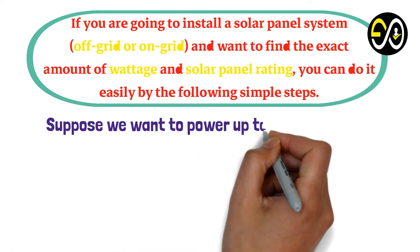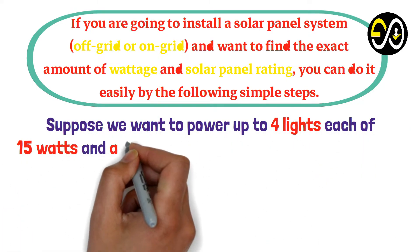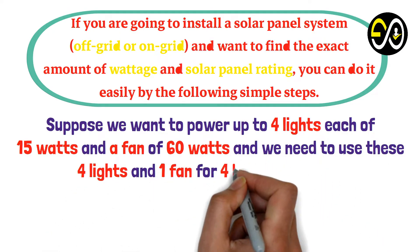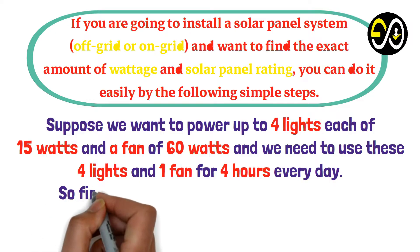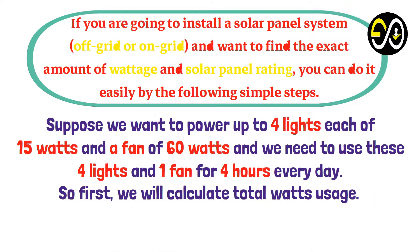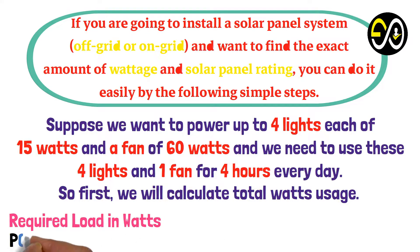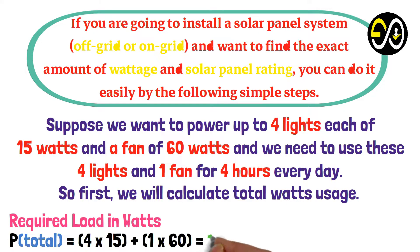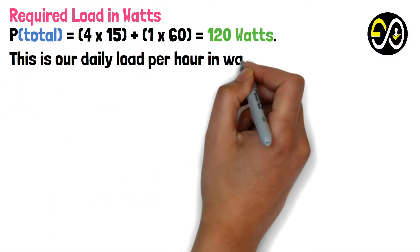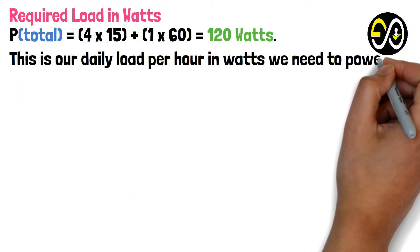Suppose we want to power four lights each of 15 watts and a fan of 60 watts, and we need to use these four lights and one fan for four hours every day. First, we calculate the total load in watts: P_total = (4 × 15) + (1 × 60) = 120 watts. This is our daily load per hour in watts that we need to power by solar panels.